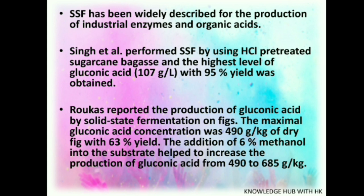The production of gluconic acid has also been carried out using solid-state fermentation. Singh et al. performed solid-state fermentation using sugarcane bagasse treated with HCl, yielding the highest level of gluconic acid of above 95%. Rokers reported the production of gluconic acid by surface solid-state fermentation using figs. The maximal gluconic acid concentration was 490 grams per kg of dry fig with 63% yield. The addition of 6% methanol into the substrate helped to increase the production from 490 grams per kg to 685 grams per kg.